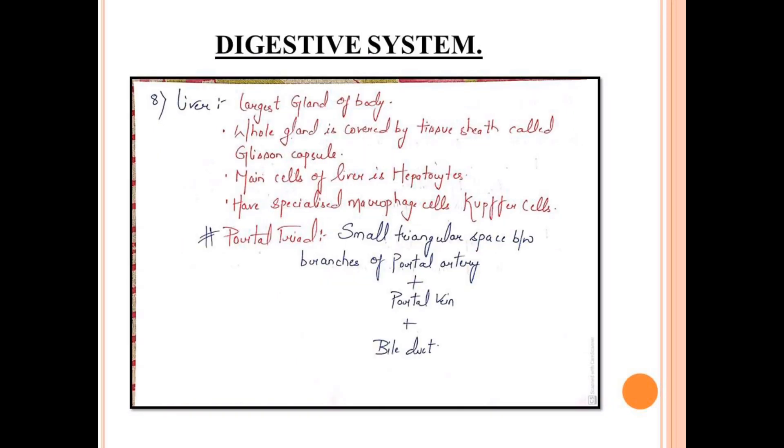Moving to the next organ, liver. Liver is the biggest gland of the body. It is lined with a connective tissue sheet called Glisson's capsule. Its main liver cells, main functional cells, are hepatocytes. It has some Kupffer cells. Kupffer cells are macrophage cells that help in the immune system. The most important characteristic is portal triad. Portal triad is a triangular space formed by the portal artery, portal vein, plus bile duct.